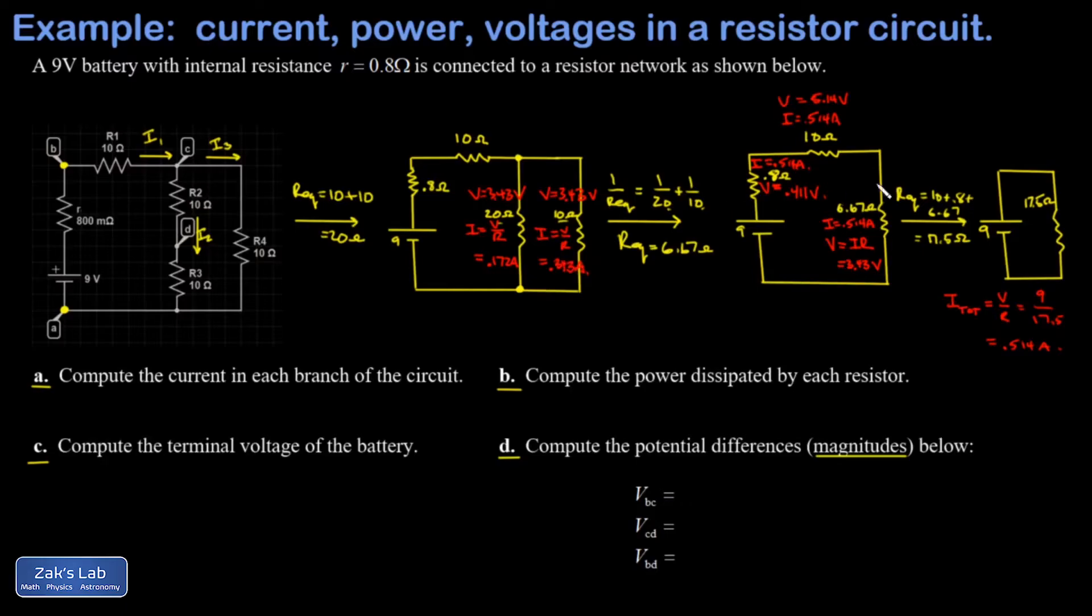Now I didn't do anything to the 10 ohm resistor up here or the internal resistance over here, so I could just copy their numbers. And in our final step back, we're going to take that 20 ohm series equivalent resistance and break it back into the two individual 10 ohm resistors.